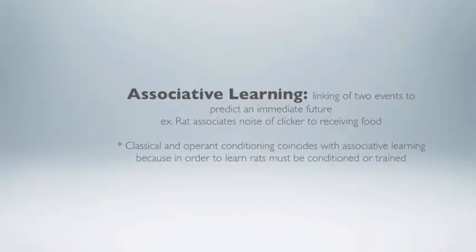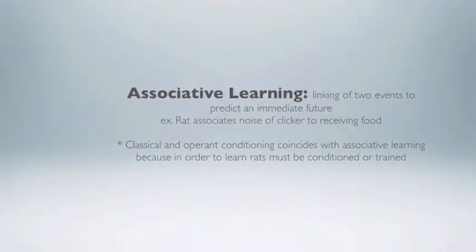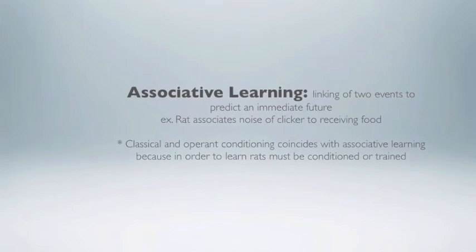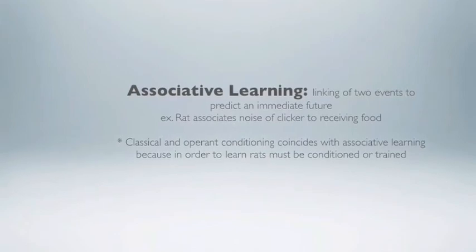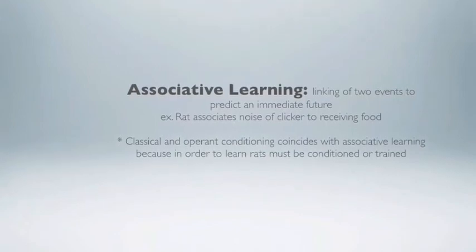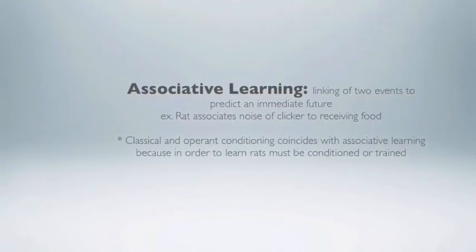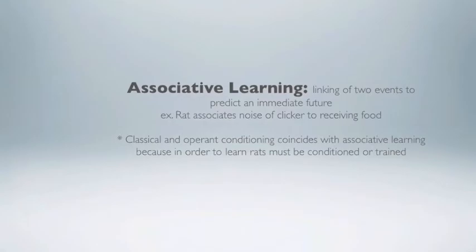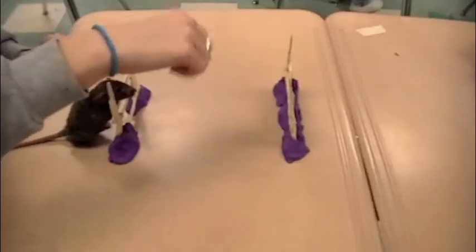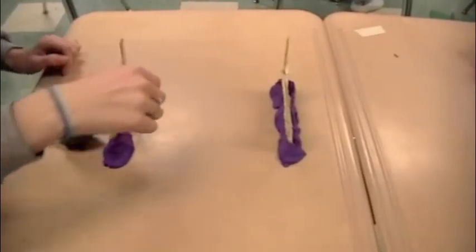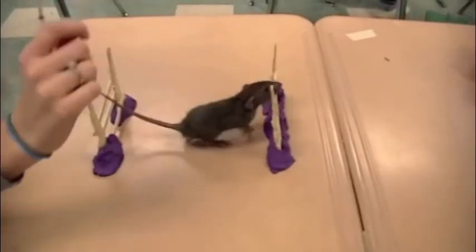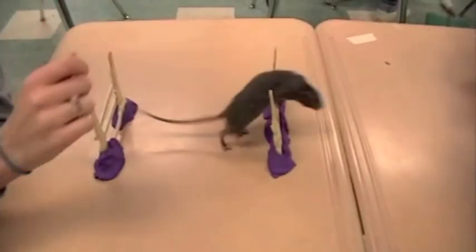Associative learning involves the linking of two events to predict an immediate future. For example, Polo associates the sound of the clicker to receiving a treat. Polo was able to associate the sound of the click with receiving a treat, which motivated him to complete the hurdles.